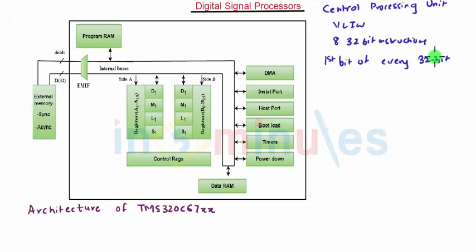Now the CPU also contains two data paths which contains registers A and B. Now each data path has four functional units namely L, M, S and D. They stand for Logic, Multiply, Shifting and Data Address operation.